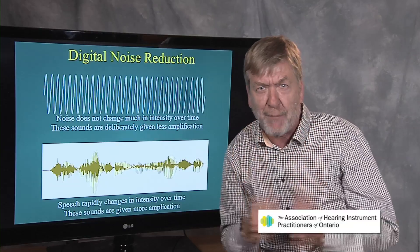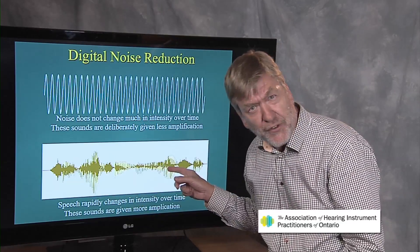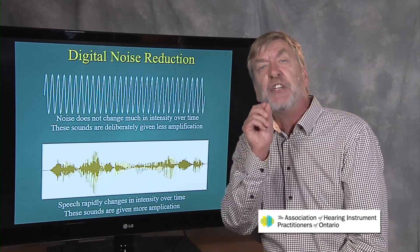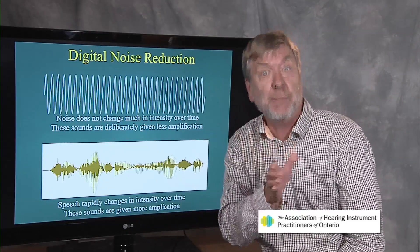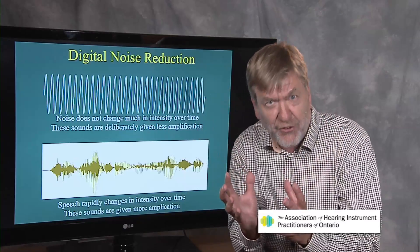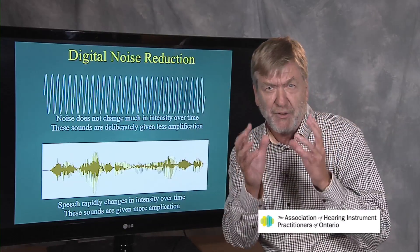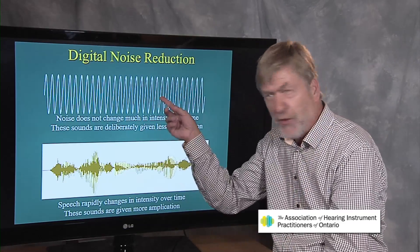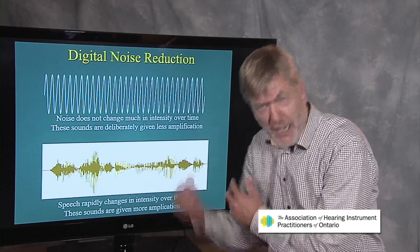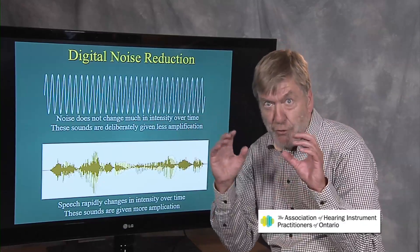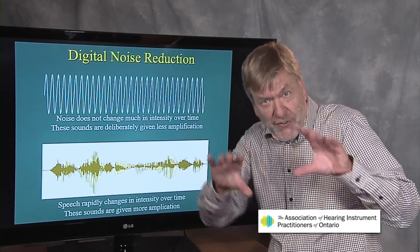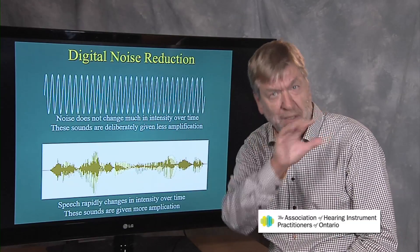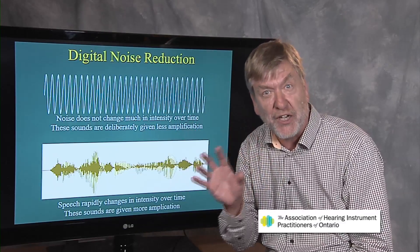But speech — the sound of my flapping gums right now — is totally different. Look at how it's changing rapidly over time. That's the uniqueness of the acoustics of speech. In digital hearing aids, we build in an artificial intelligence that allows the hearing aid to use statistics to ask: is the sound coming into my microphone more like a steady signal or more like a rapidly modulating one? If it looks like speech, amplify like crazy. If it looks like noise, reduce the amplification. The technique is to detect how much the amplitude of the sound is modulating or changing over time — that's digital noise reduction.